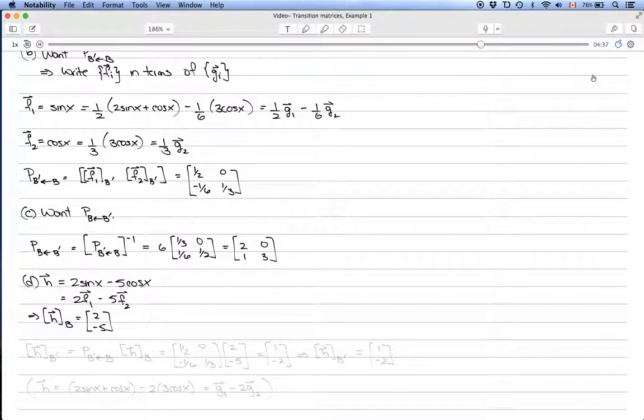For the coordinate vector h in terms of B prime, instead of doing it the same way, let's remember that we have the rule that h in terms of B prime equals the transition matrix from B to B prime times the coordinate vector in terms of B.